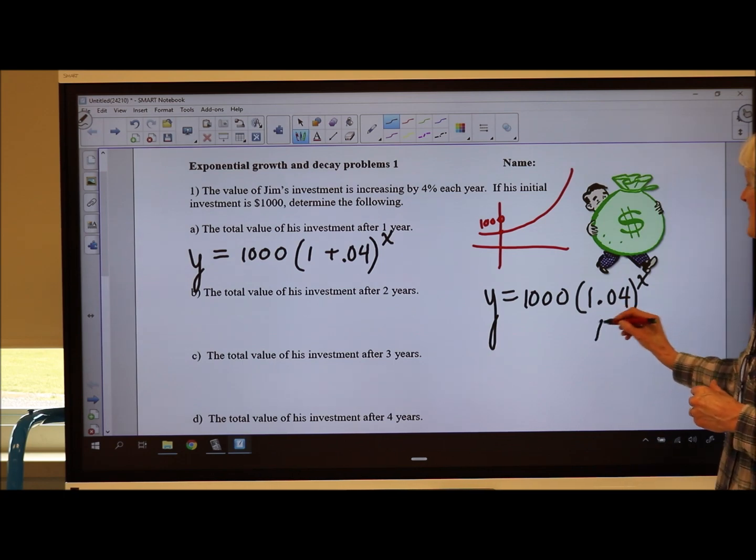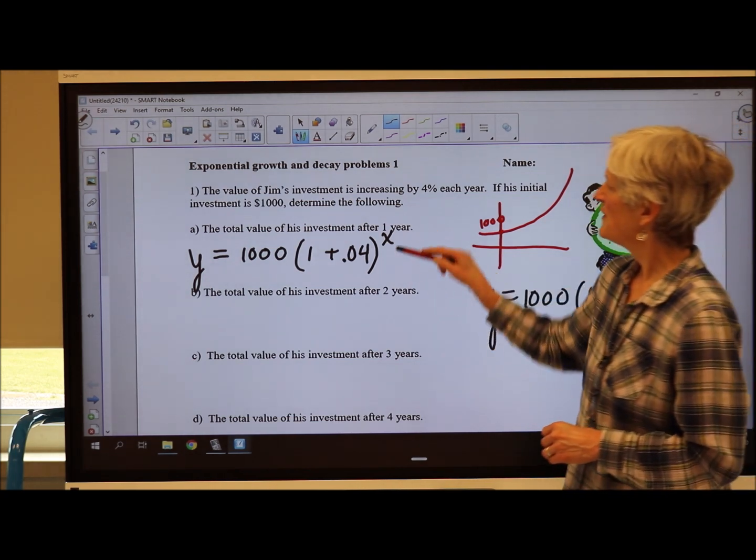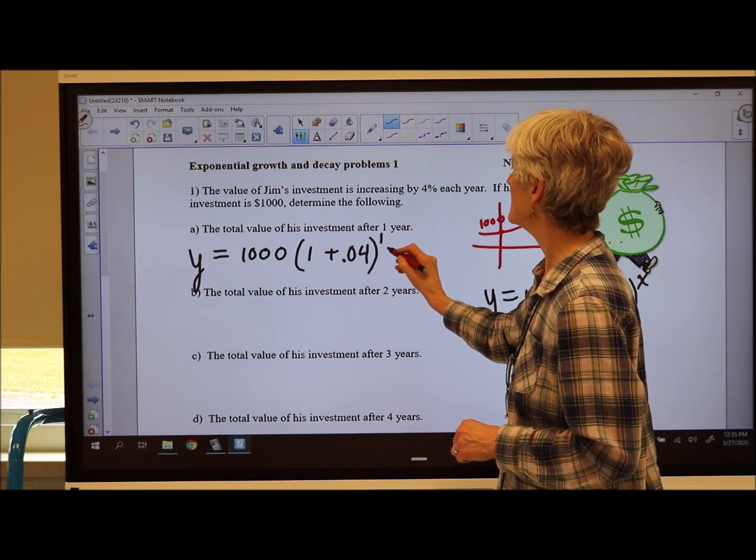Remember, that's like multiplying by 104% each year. So if I want to figure out how much money he's going to have after one year, I'm going to put a 1 there.